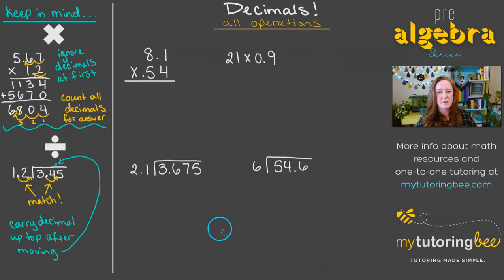Let's move on to some multiplication and division problems. So again, I have some notes over here on the side. And we're going to start with multiplication. So the first thing that we can do once we have our problem set up is basically ignore the decimals for now. We're going to multiply this as if it's 81 times 54.